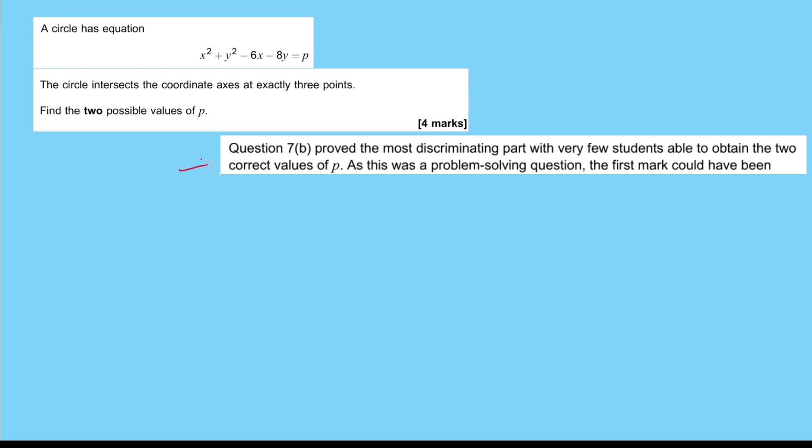This is a small extract from the examiner's report which says that this question proved the most discriminating part, with very few students able to obtain the two correct values of p. I thought that was the most interesting part, that very few students were able to solve this. If you want to have a go at this problem, pause the video now, but I'm going to dive straight into a solution here.